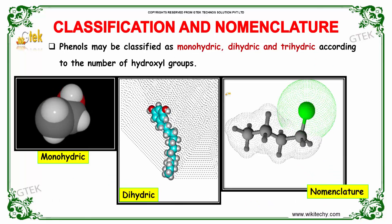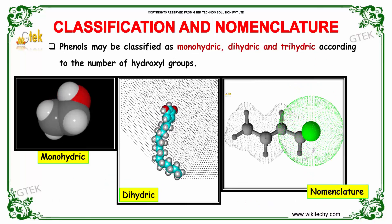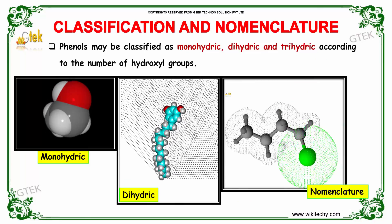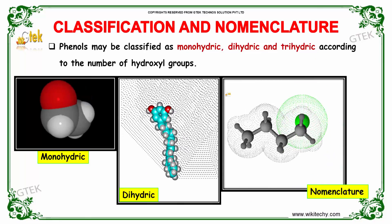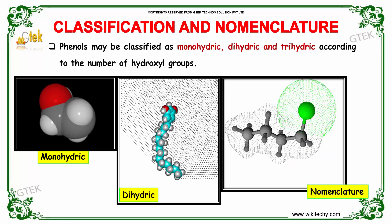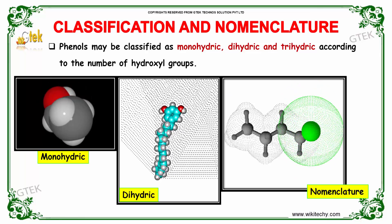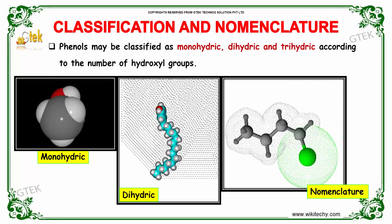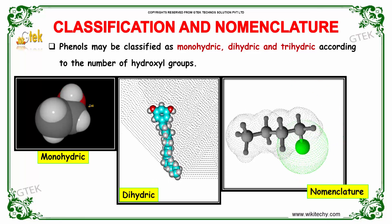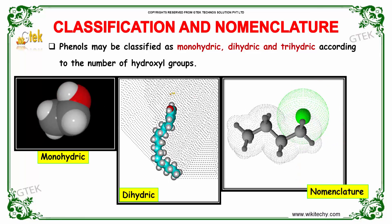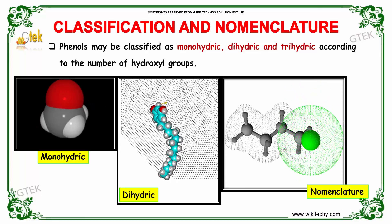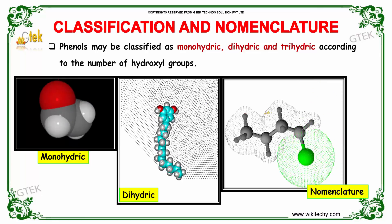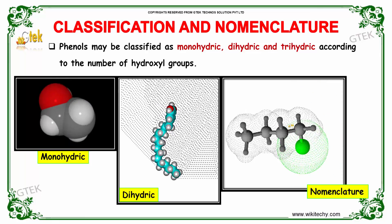Phenols may be classified as Monohydric, Dihydric, and Trihydric according to the number of hydroxyl groups present. The general structures of Monohydric, Dihydric, and Trihydric are shown here.